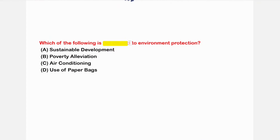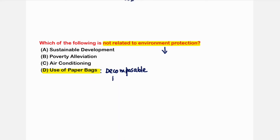The next question asks which of the following is not related to environmental protection. Option D — use of paper bags — is recommended because paper is decomposable and will be recycled in the ground.